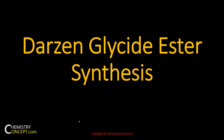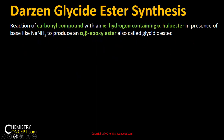Welcome students to chemistry concepts. Now we will be discussing Darzen Glycide Ester Synthesis. It is a reaction of a carbonyl compound with an alpha hydrogen containing alpha halo ester.